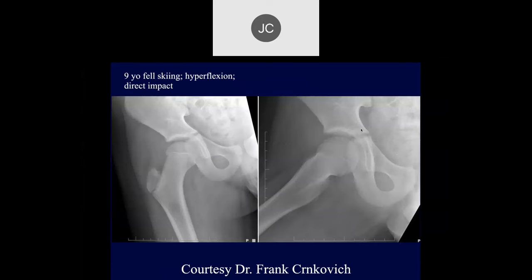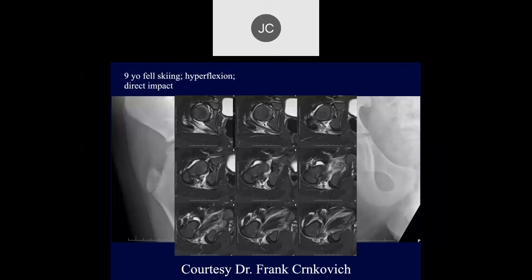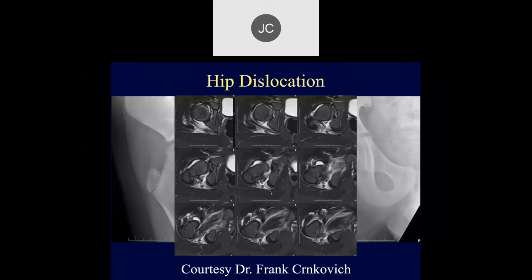Nine-year-old fell skiing, hyperflexion direct impact. There seems to be widening of the acetabular growth plate. On MR, the growth plate doesn't look too bad, but what we see is a lot of posterior soft tissue injury. This was a hip dislocation and a tear of the posterior capsule.